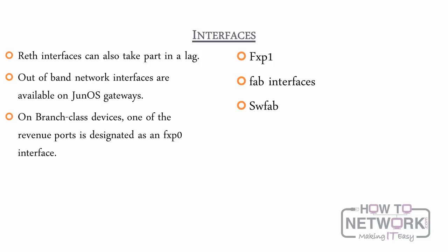Fabric links transmit real-time objects, state information, fabric probes, and transit data. If the only fabric link fails, the backup node loses all state information and is disabled. The only way to recover from this is to reboot that node. Dual fabric links allow sessions to be maintained if one fails.